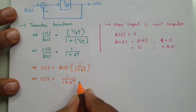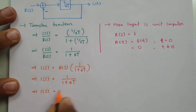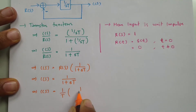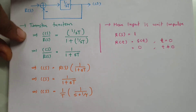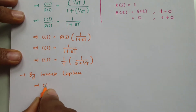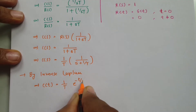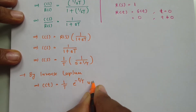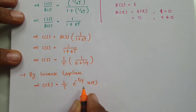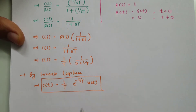Now we want this output in terms of the time domain. Taking T common from the denominator, we get C(s) = (1/T) · 1/(s + 1/T). Applying the inverse Laplace transform, the output in the time domain is C(t) = (1/T) · e^(−t/T) · u(t). This is how our output C(t) will be in the time domain when the input is an impulse.